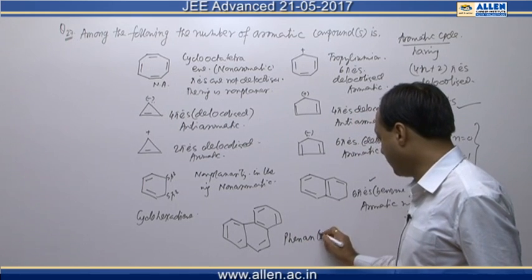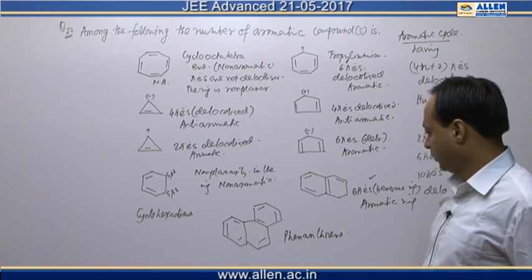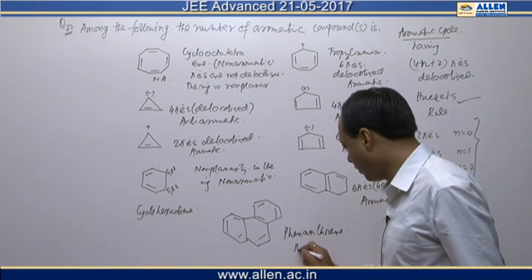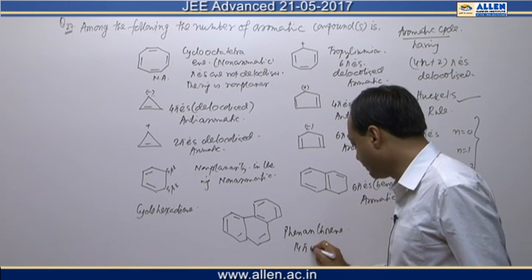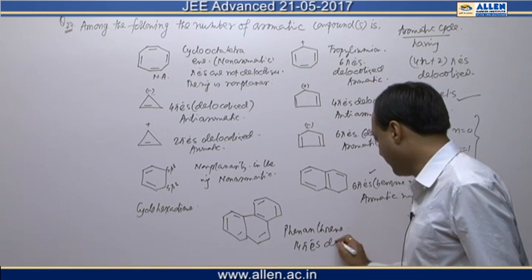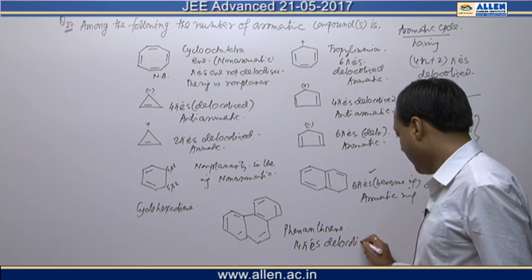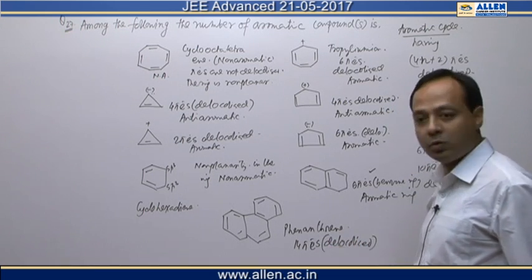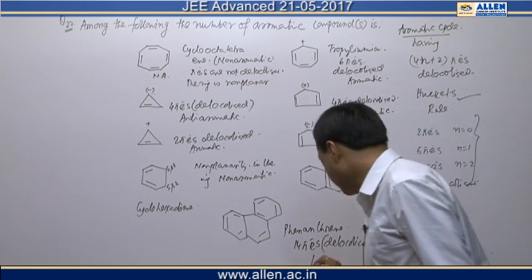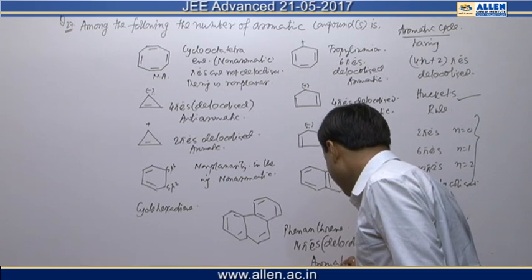Phenanthrene actually has 1, 2, 3, 4, 5, 6, 7 — it is a 14 pi electron system, and since 14 pi electrons are delocalized, this compound is aromatic in nature.